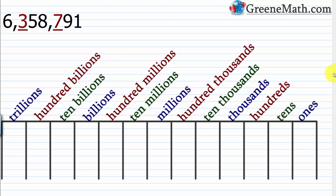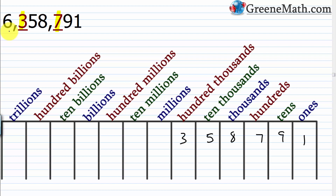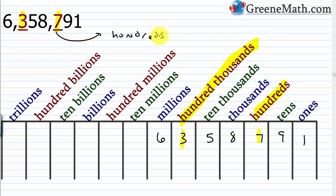For 6,358,791 with 7 and 3 underlined: 1 in ones, 9 in tens, 7 in hundreds, 8 in thousands, 5 in ten-thousands, 3 in hundred-thousands, 6 in millions. The underlined 7 is in the hundreds place, and the underlined 3 is in the hundred-thousands place.